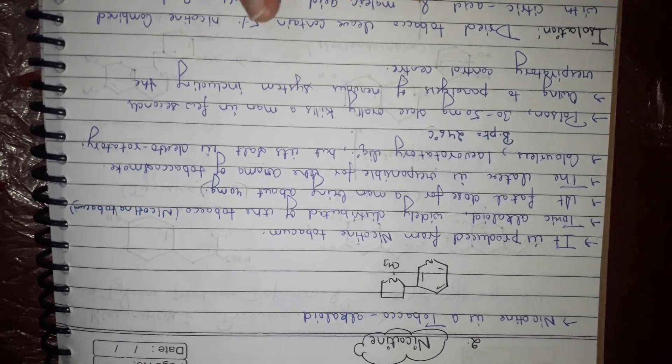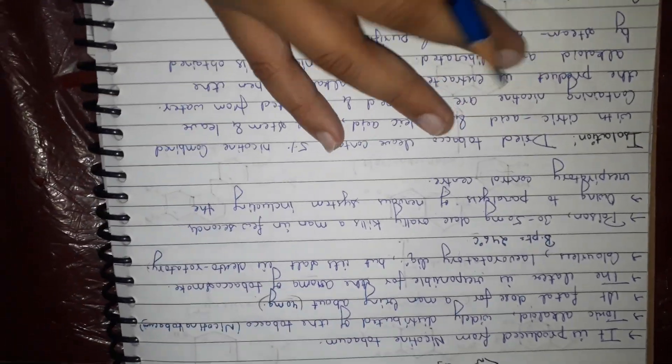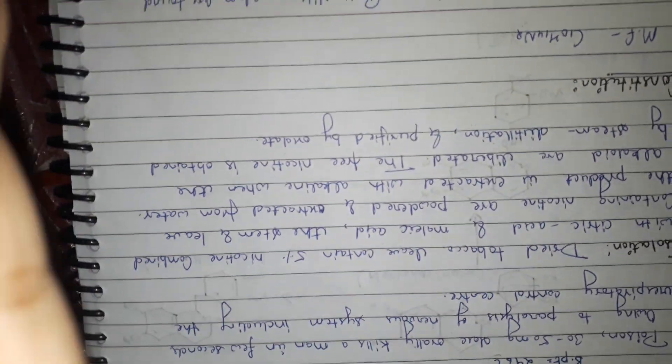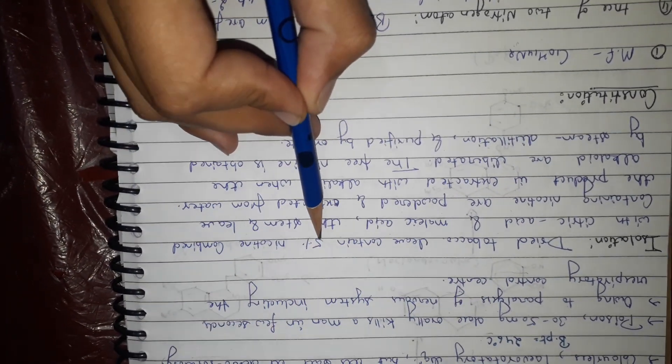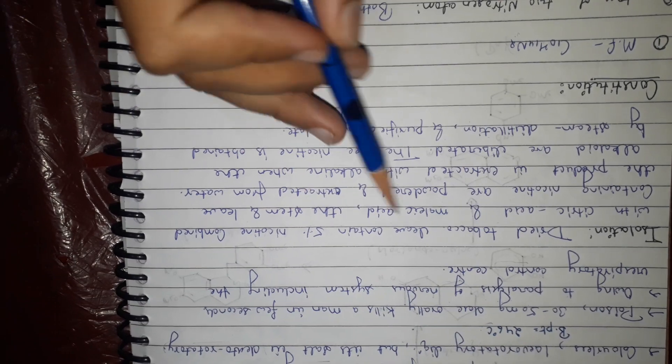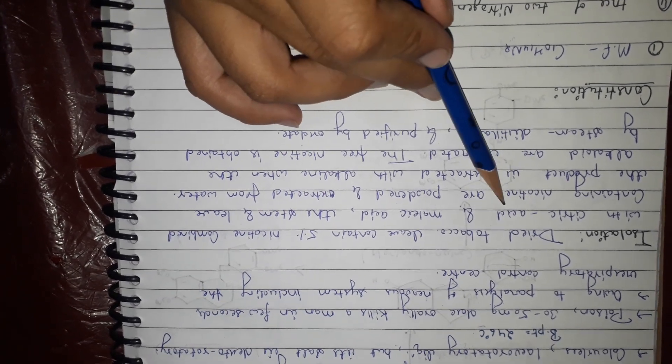This includes the respiratory control center. Now isolation of tobacco - it is isolated from tobacco leaves containing 5% nicotine. Dried tobacco is combined with citric acid and malic acid.